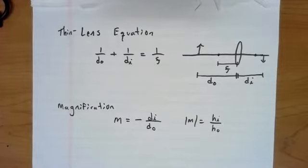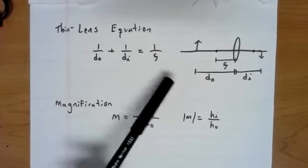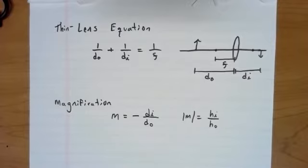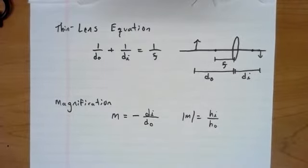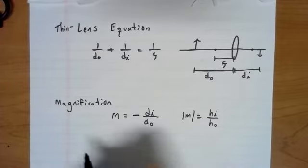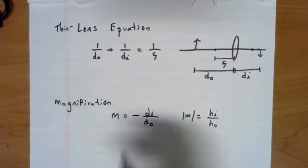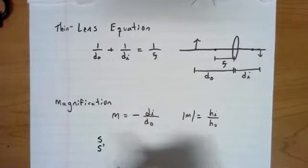So I do want to make one note before I go through the sign conventions. I like to do DO and DI, the distance for the object and the distance for the image. But I will be referring to our Knight textbook as I'm making this video. The textbook I'm using for my class is the Knight textbook. It is the AP edition, third edition from Pearson.